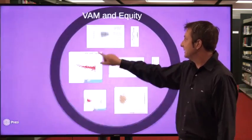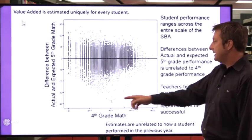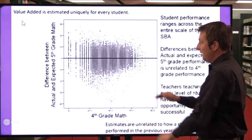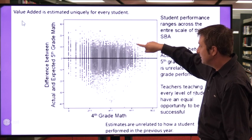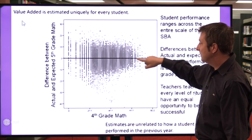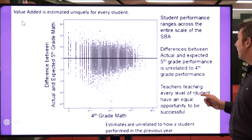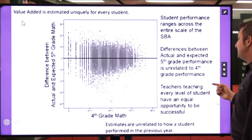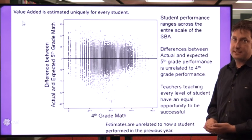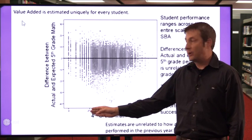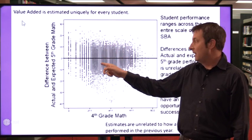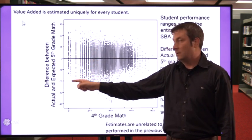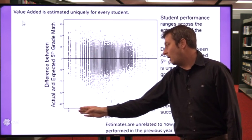That's true across the entire range — any slice we take. Looking at students who scored about a 60, there are just as many who overperformed as underperformed. So the differences are unrelated to their fourth grade performance. Teachers teaching every level of student have an equal opportunity to be successful — whether your classroom average is 30 or zero, just as many students could overperform as underperform the following year.